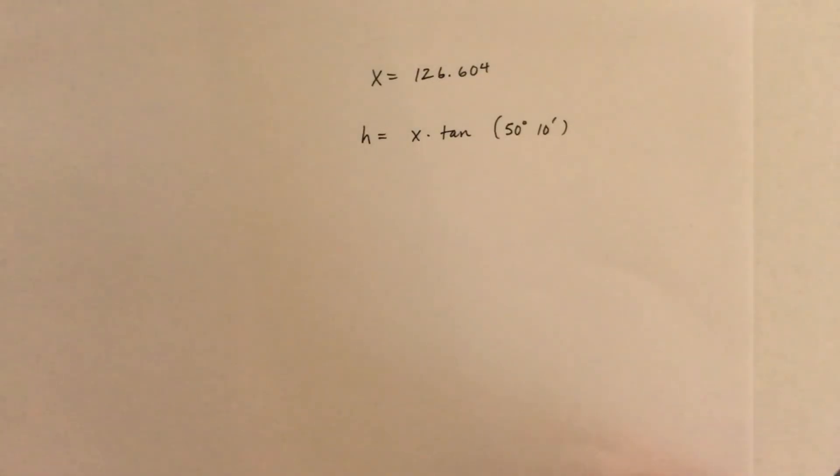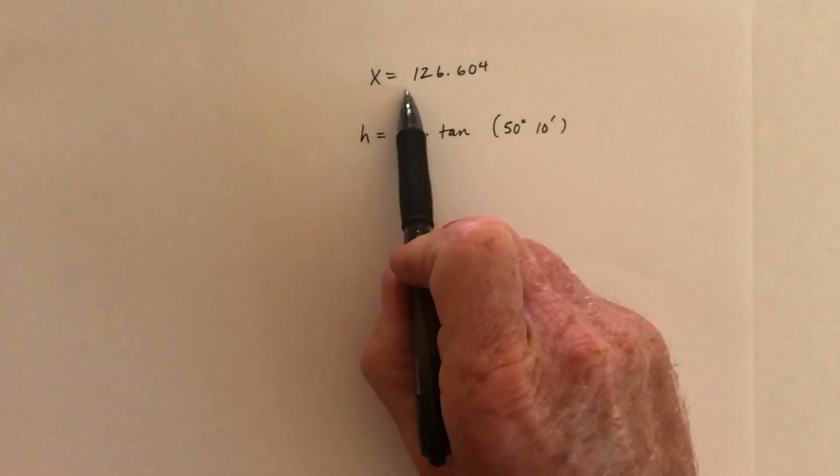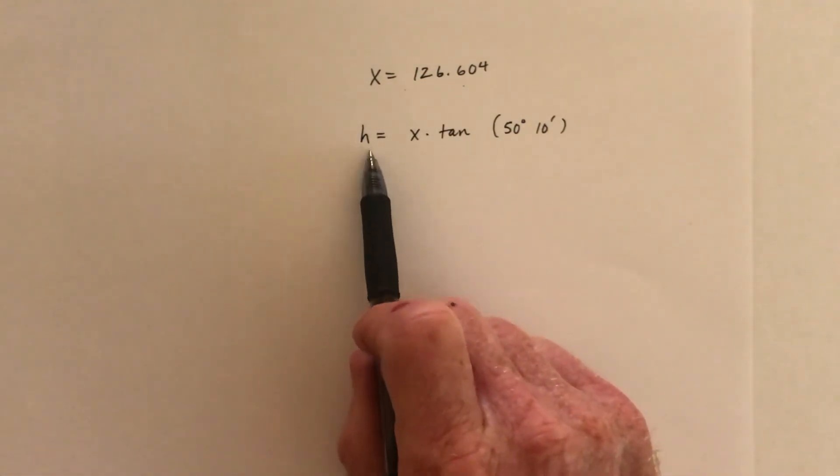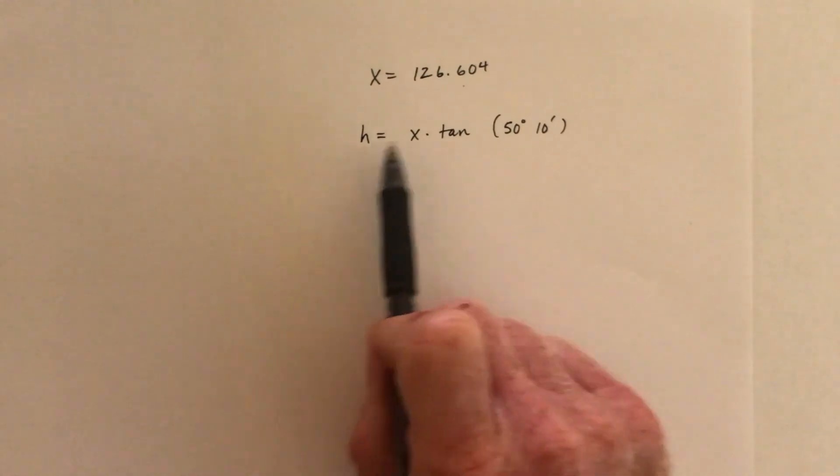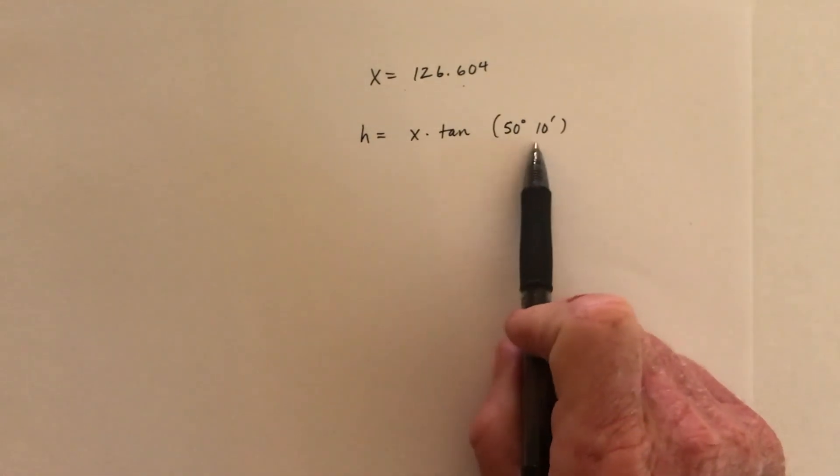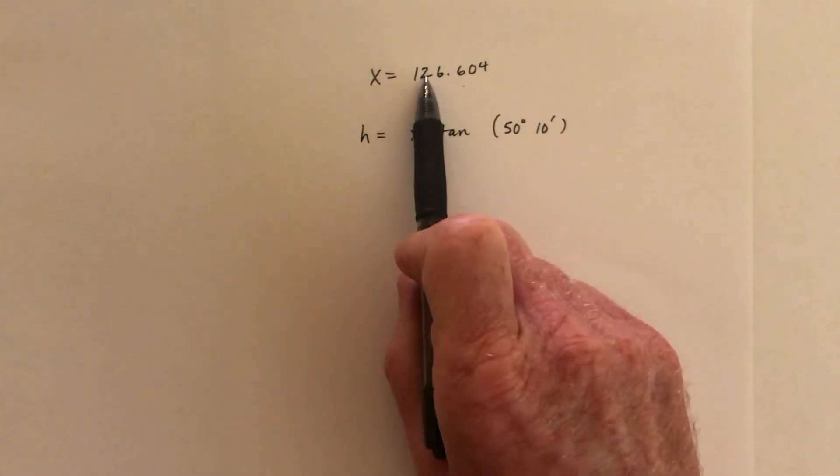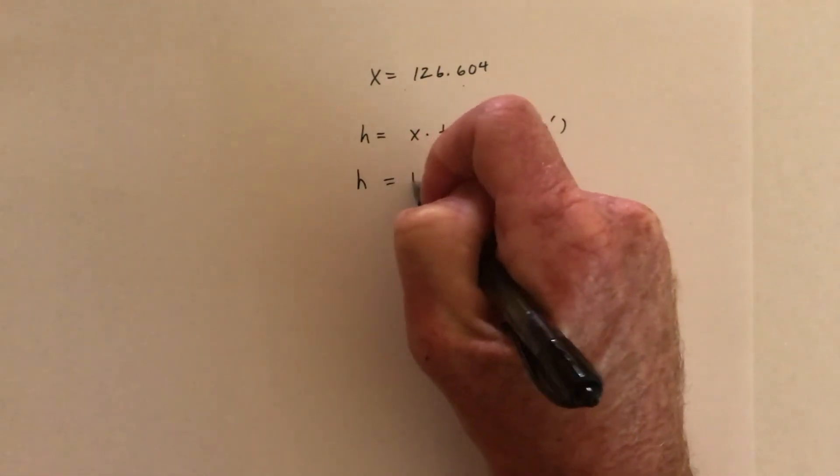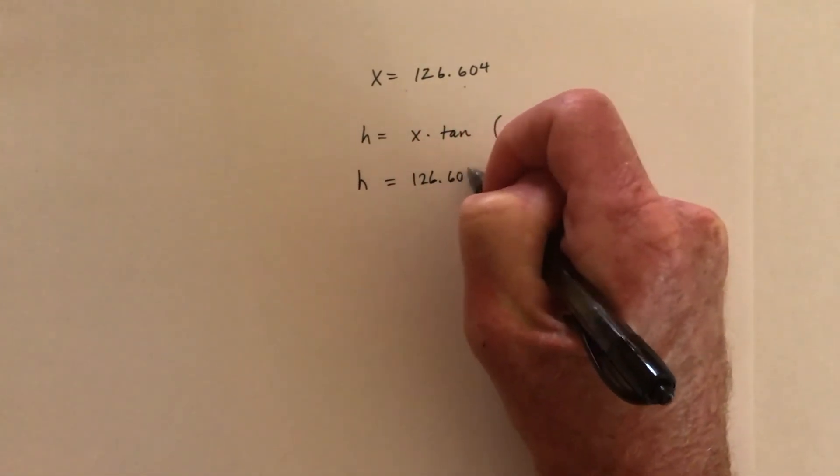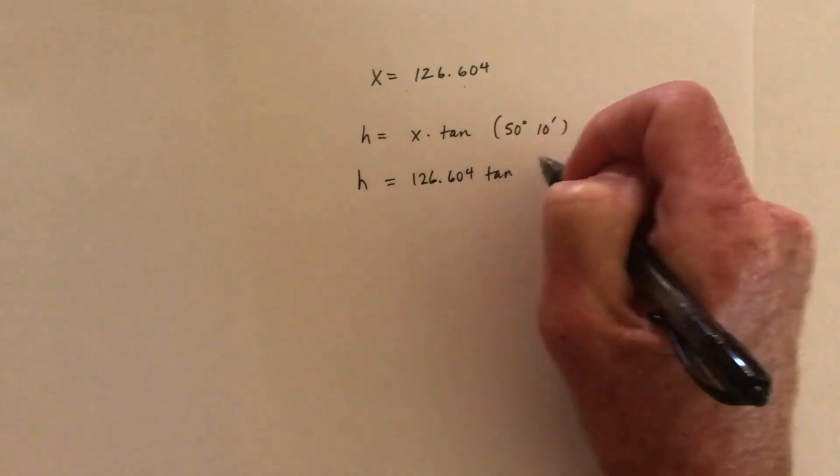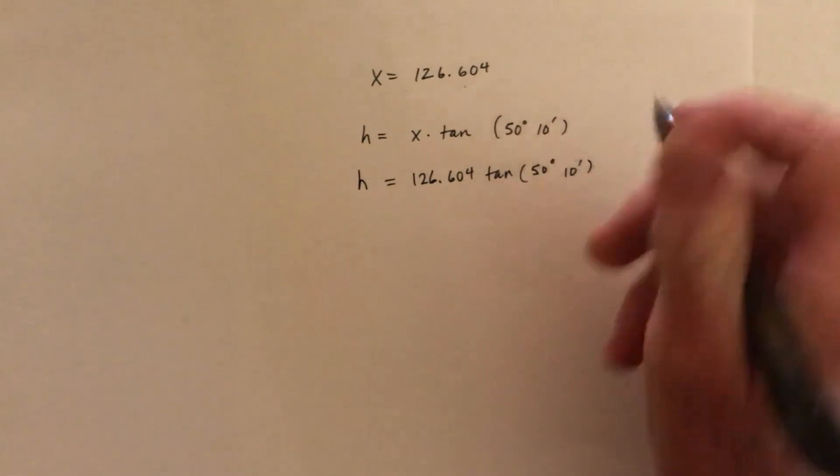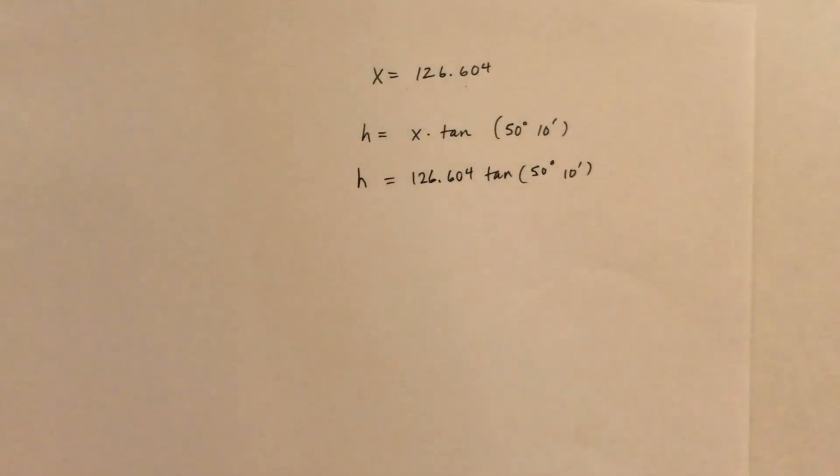Well, I thought I was done with that problem, but it turns out that I had only solved for x. x is not the height of the building, so what I need to do is go back and, at the top of the page, I had this equation. H is equal to x times tangent of 50 degrees in 10 minutes, and then take this 126 and plug it in. And that is going to be the h, so 126.604 tangent of 50 degrees in 10 minutes, and what does that equal?